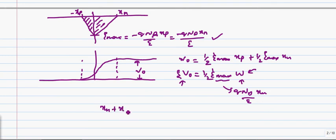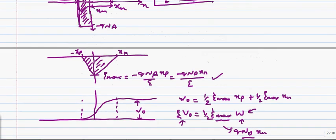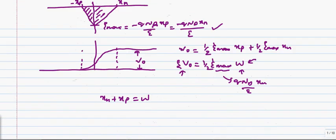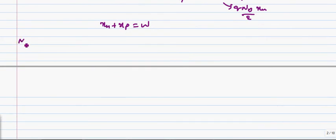Now, before going to that, let's take when x_n plus x_p equals to w and we have one equation, which we saw before that this is the important equation. N_d times x_n, let me rewrite this, equals n_a times x_p.